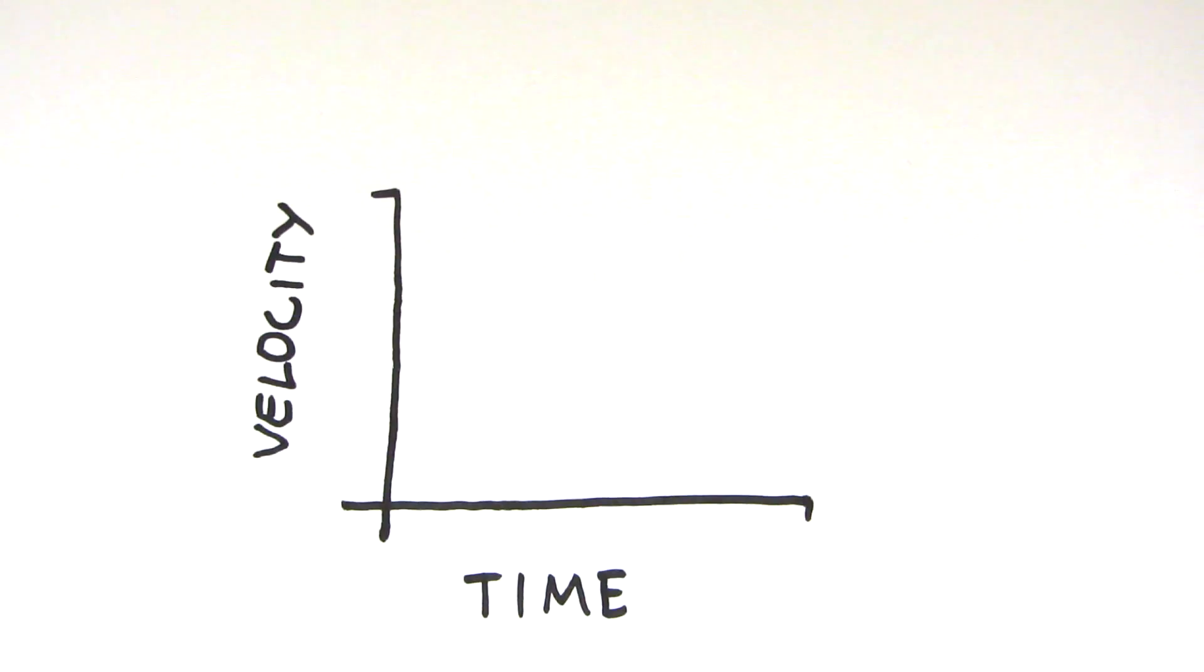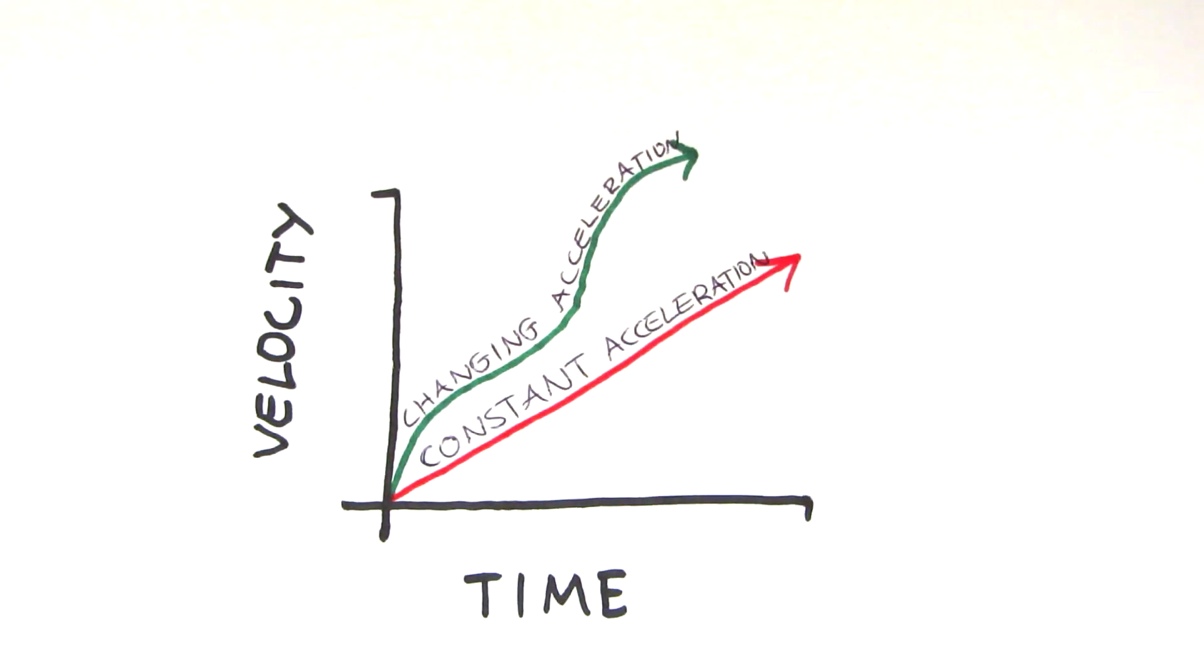Instead, we can use a velocity-time graph. In this case, the slope on the graph tells us that an object is accelerating. If the line is straight, then the acceleration is constant, and if it's curved, the acceleration is changing.